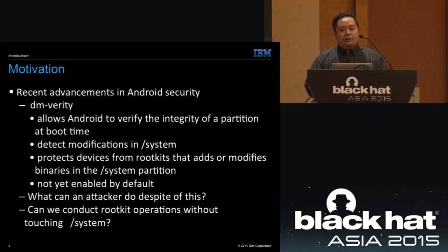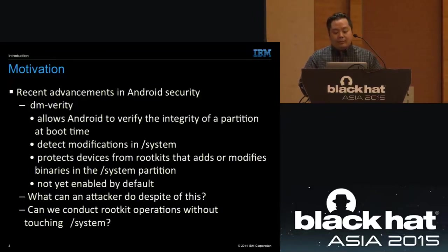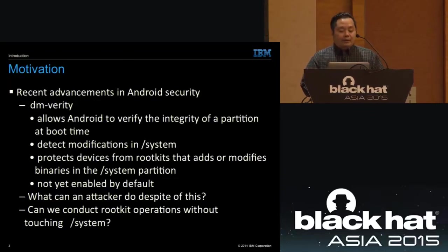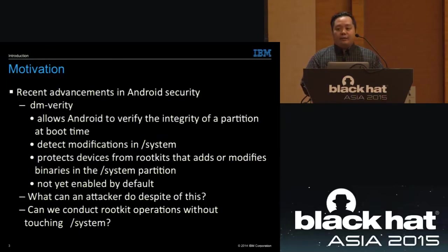The main motivation for this research is recent advancements in Android security. One notable one is DMVerity, which allows Android to verify the integrity of a partition at boot time. You can use this to detect modifications to the system partition, protecting devices from rootkits that add or modify binaries there — which is how Android rootkits traditionally work. However, DMVerity is not yet enabled by default, but security researchers want to know what an attacker can do despite this.